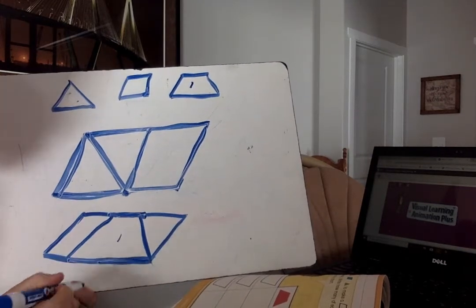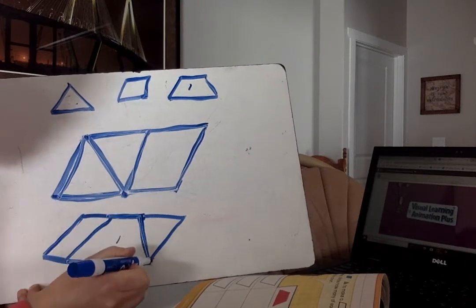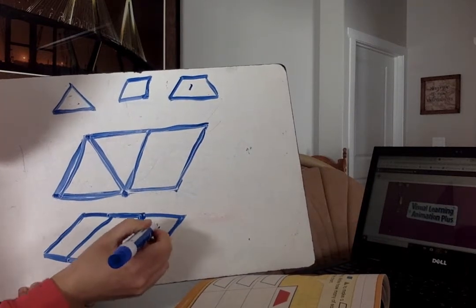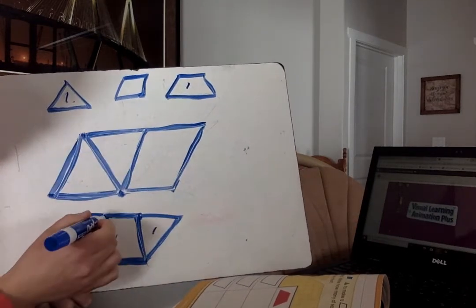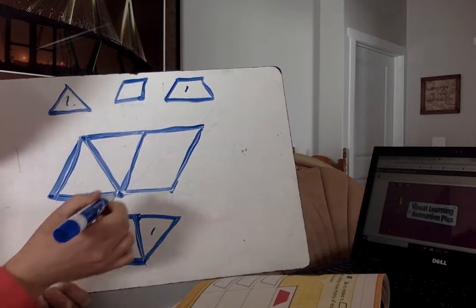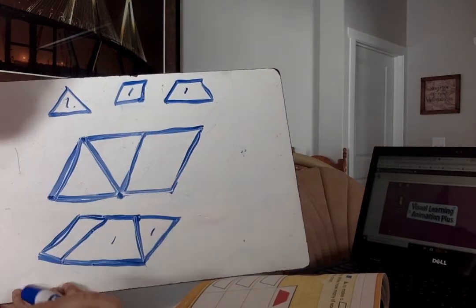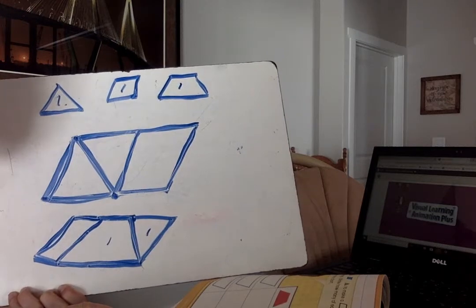So I used one of these. And look, just by doing that, it already created the other shapes for me. One triangle, and one small parallelogram. One of each.